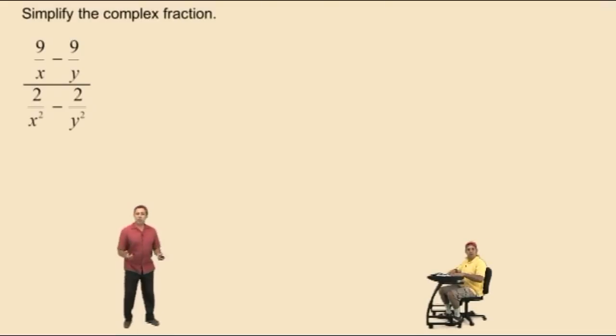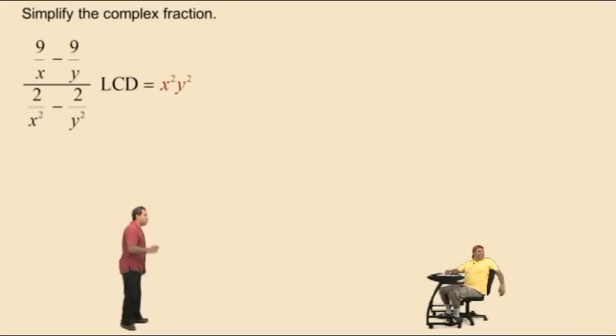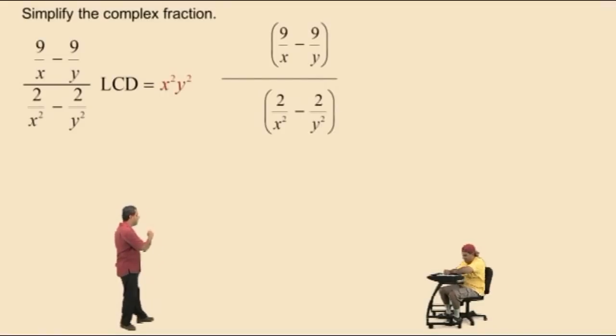All right, in order to do this problem, we're going to use the lowest common denominator of all four of our fractions to clear our fractions out. Okay Charlie, what's the lowest common denominator for all four of our fractions? x squared y squared. Very nice. Now notice we're going to multiply both the numerator and denominator by our LCD and we're going to distribute to each term.